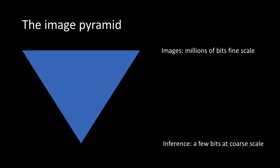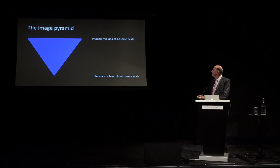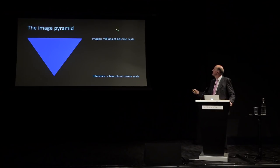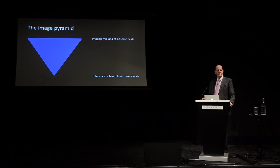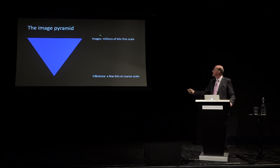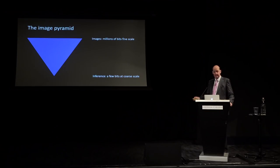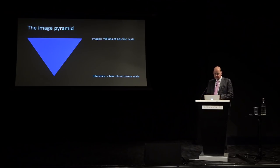This tension leads us to a general theory of vision, often called the image pyramid. At the bottom level we have millions of pixels — lots of fine detail, daunting information. At the top level we have inference: me saying 'it's a picture of a horse' or 'it's a sleeping cat.' The vision chain has to get from pixels all the way up to inference. Almost everyone working in vision would accept that as a contention.